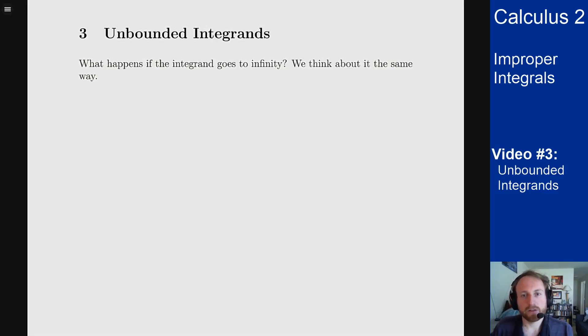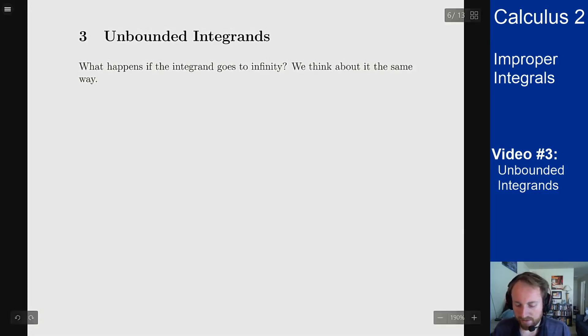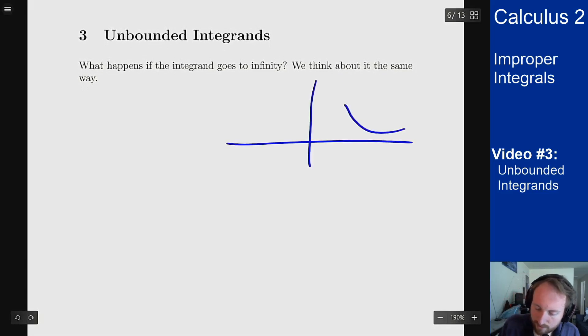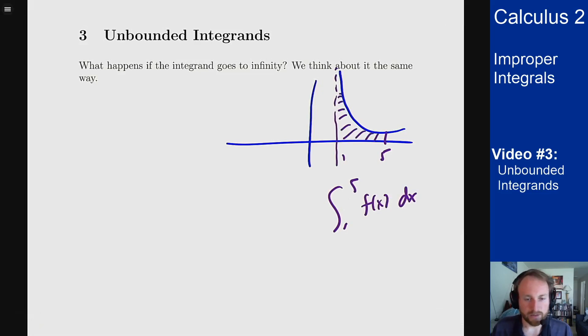In this video, we'll talk about the other type of improper integral, and that is the one where the function itself goes to infinity. So how do we handle the case where the function goes to infinity? Something where the graph looks like this, I have an asymptote here, and I want to find the integral from 1 to 5 of f(x).